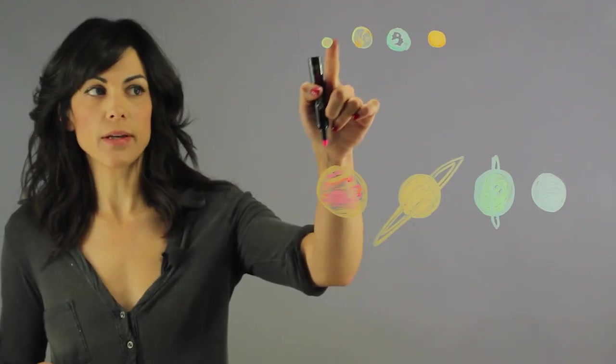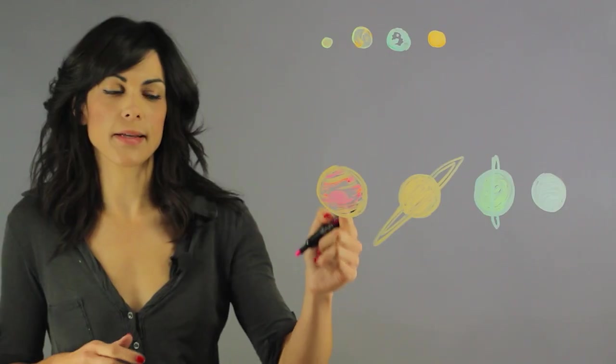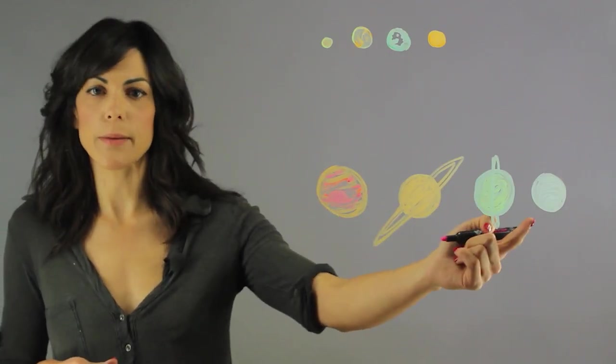So let's first talk about who are the inner planets and who are the outer planets. Inner planets are Mercury, Venus, Earth, and Mars. Outer planets are Jupiter, Saturn, Uranus, and Neptune.